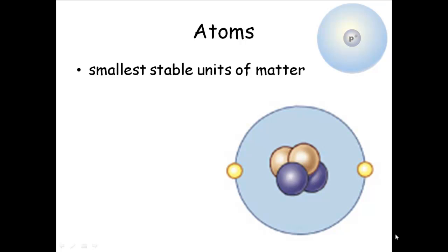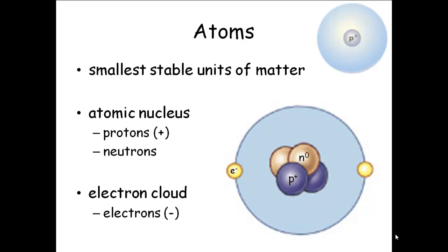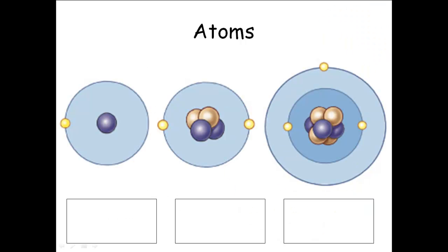For our purposes, an atom consists of what's called the atomic nucleus and the electron cloud. In the atomic nucleus are two types of particles. One's called a proton, one's called a neutron. Protons have a positive charge. Neutrons are neutral. They have a zero charge, no charge. And then surrounding this atomic nucleus is an electron cloud containing electrons. Electrons have a negative charge. We're going to pretend that the electrons orbit the nucleus like the planets orbit the sun.